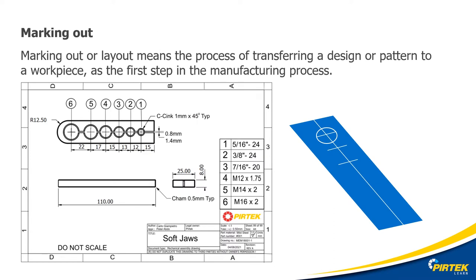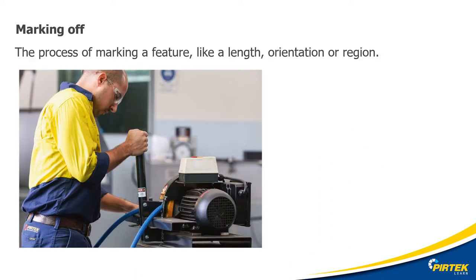Some terminology. Marking out is the process of transferring the whole design onto the workpiece. Marking off is the process of marking a length, a feature, a side, or an orientation. In this example, the technician has marked off the length of the hose that he's cutting.